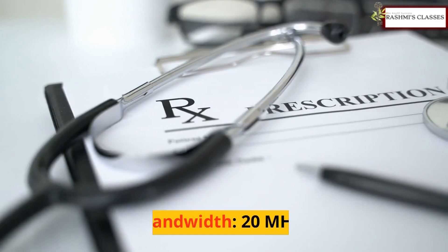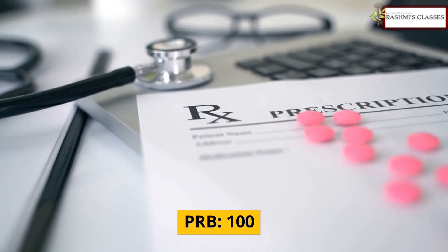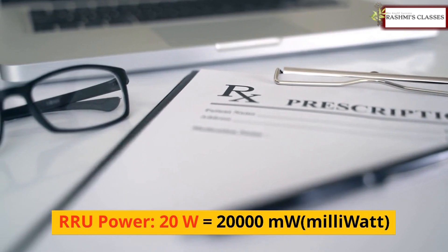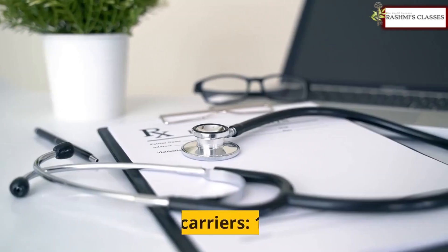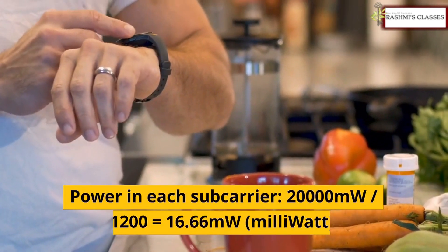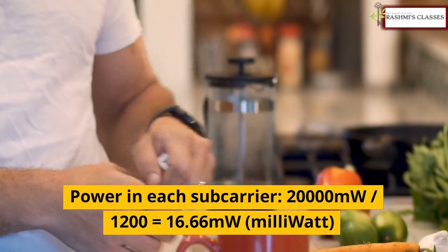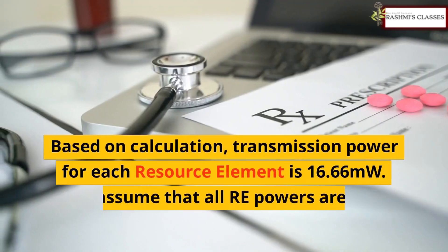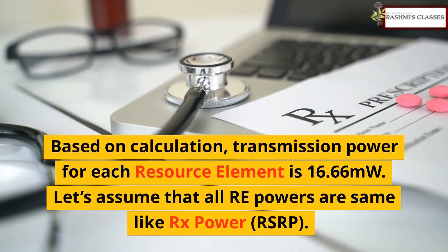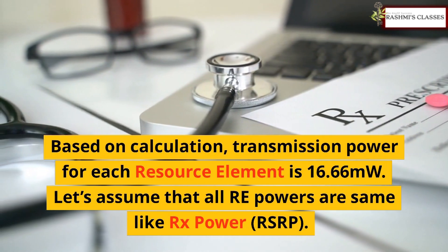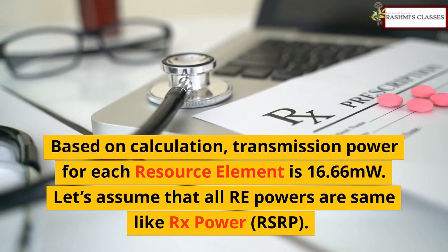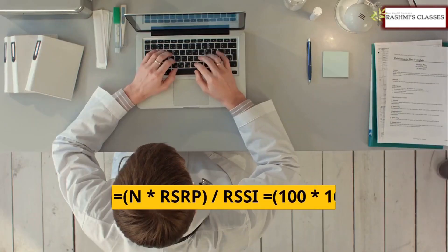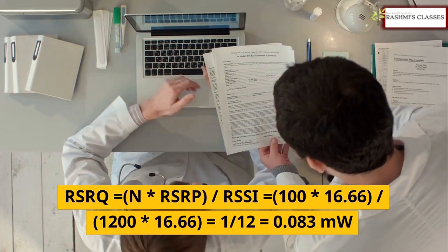For example: bandwidth 20 MHz, PRB 100, RRU power 20 W = 20,000 milliwatts, subcarriers 1200. Power in each subcarrier: 20,000 / 1200 = 16.66 milliwatts. Based on this calculation, the transmission power for each resource element is 16.66 milliwatts. Let's assume that all RE powers are the same, like RX power RSRP.